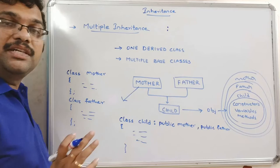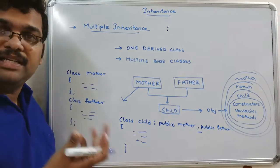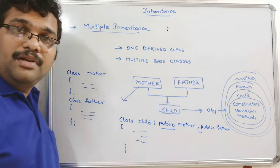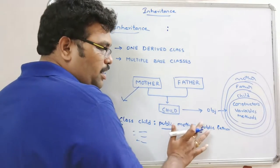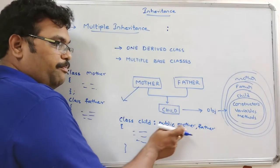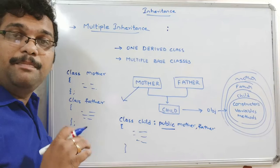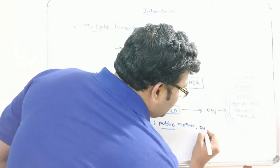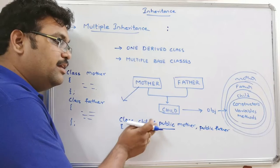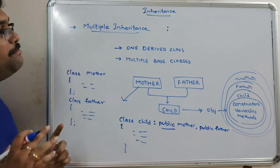When creating the child class, we write: class child, then colon, then public mother comma public father. The access specifier is compulsory for every base class. If you write public mother comma father without specifying the access specifier for father, it will treat father as private by default. So the default access specifier is private, and you must specify it explicitly for every class during inheritance.